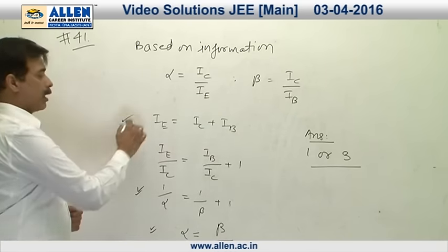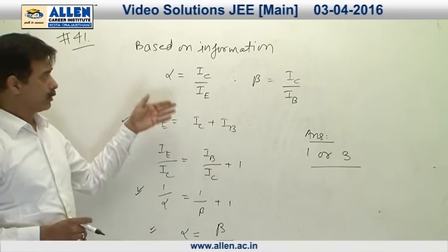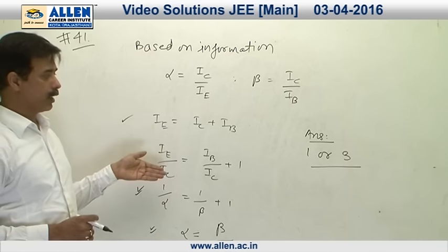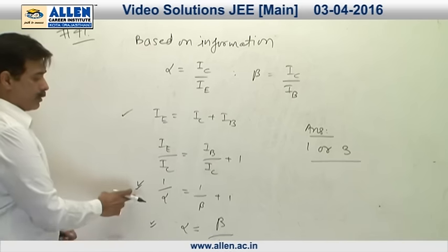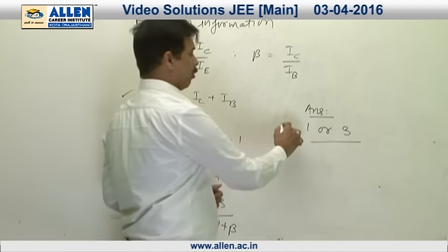Also, ammeter current is sum of collector current and base current. On substituting values of alpha and beta in this equation, we get two options which are correct. So there are two options which are incorrect, one or three.